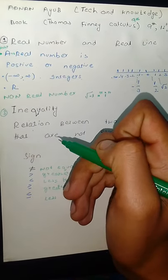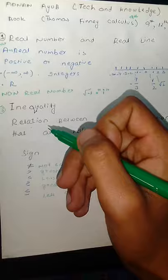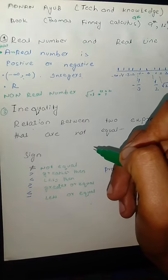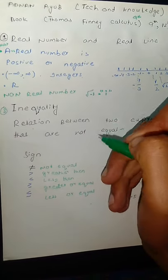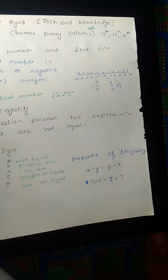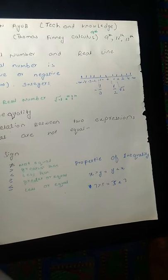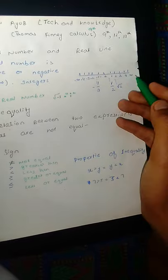Minus under root 1 is not a real number, which is an imaginary number which is iota. Here we have the real line, which we call the number line.